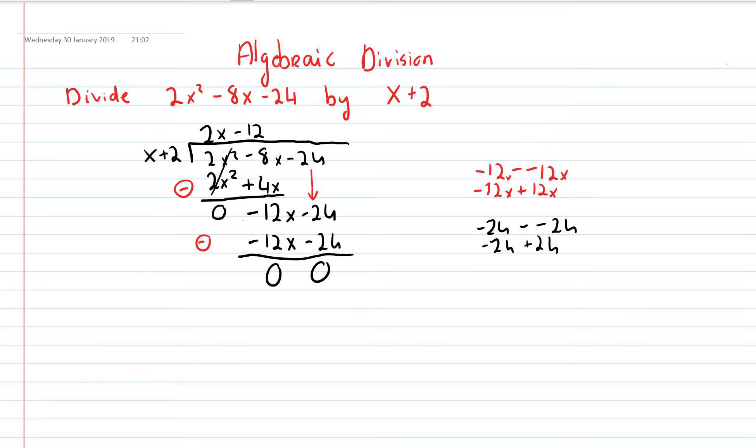So our answer is 2x minus 12. Now what are we saying here? We're saying that this divides into this that many times, 2x minus 12 times.